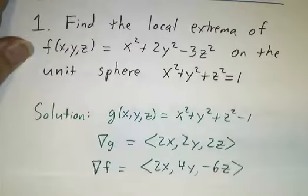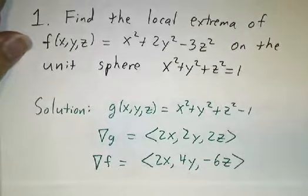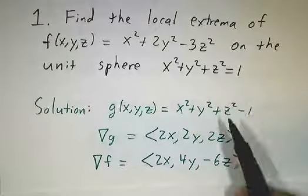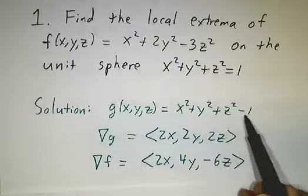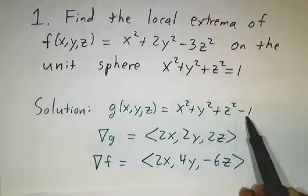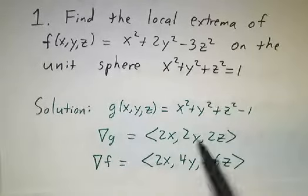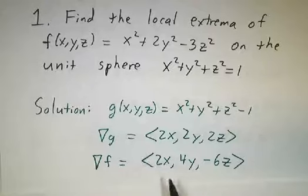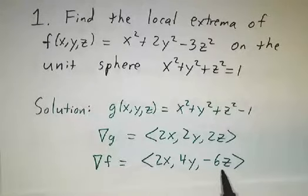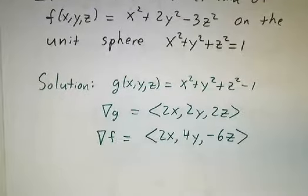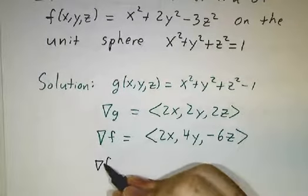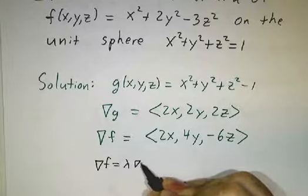So in this case, our function g that we're setting equal to 0 is x squared plus y squared plus z squared minus 1. And the gradient of g is just 2x, 2y, 2z. And the gradient of f is 2x, 4y minus 6z. And so we need to set up the equations. Gradient of f is lambda times the gradient of g.